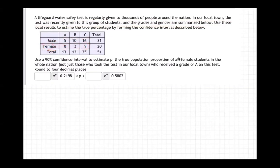Use a ninety percent confidence interval to estimate p, the true population proportion of all female students in the whole nation, not just those who took the test in our local town, who received an A on this test. So how are we going to do that?